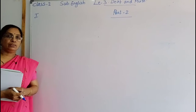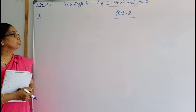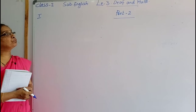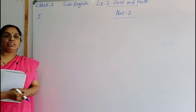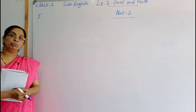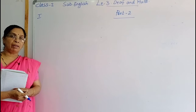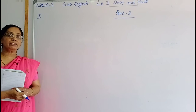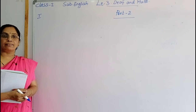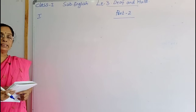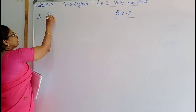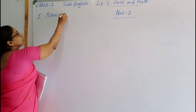Welcome to our next session. English lesson 3: deaf and mute. We understood the meaning of deaf and mute and blind. Now we are going to do the exercises. The first exercise is new words.